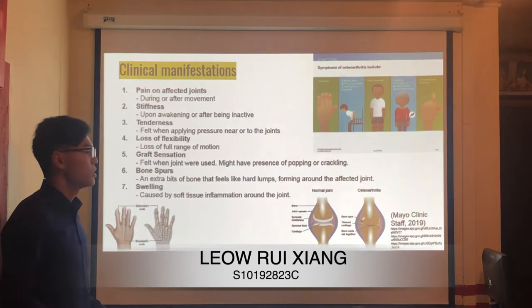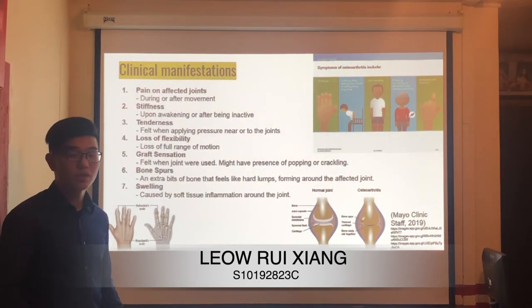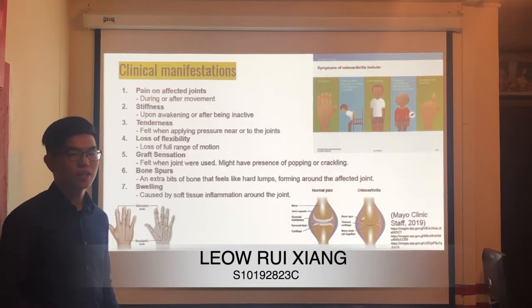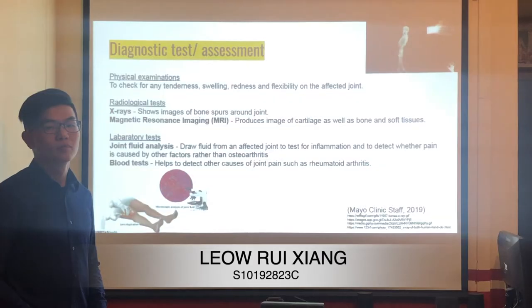Sixth, bone spurs — actual pieces of bone that feel like hard lumps forming near the affected joint. Lastly, swelling — caused by soft tissue inflammation forming around the joint.